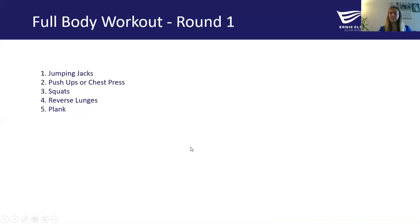So we'll go ahead and do our full body workout. We're going to do these five exercises for 30 seconds each, and then come back and do it three times total — one, two, three, four, five, take a break, and repeat for three rounds total. Then we'll do our cool down and we'll be all done.